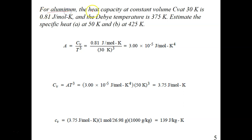The question is, for aluminium, the heat capacity at constant volume Cv at 30K is 0.81 J/mol·K, and the Debye temperature is 375 Kelvin. Estimate specific heat Cv at two temperatures here. The first one is 50K. The second one is 425K.